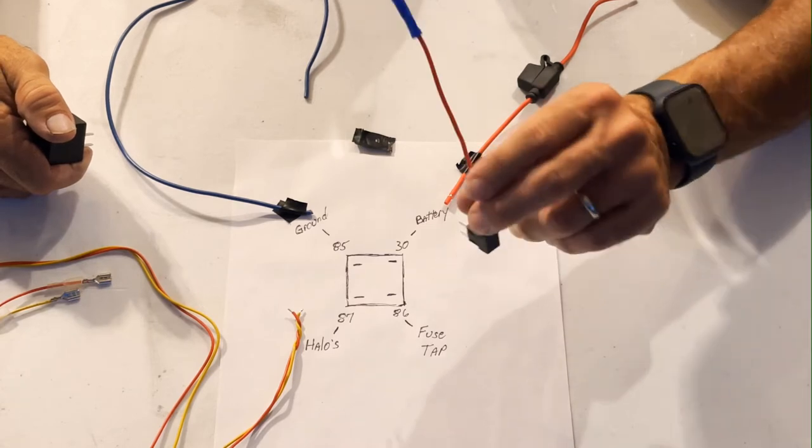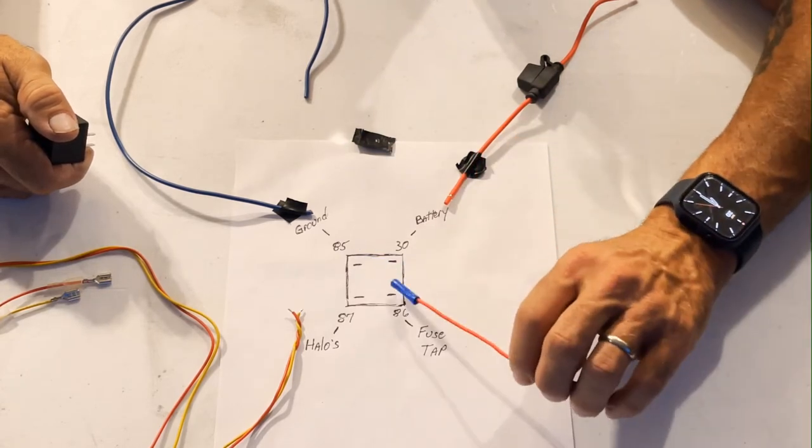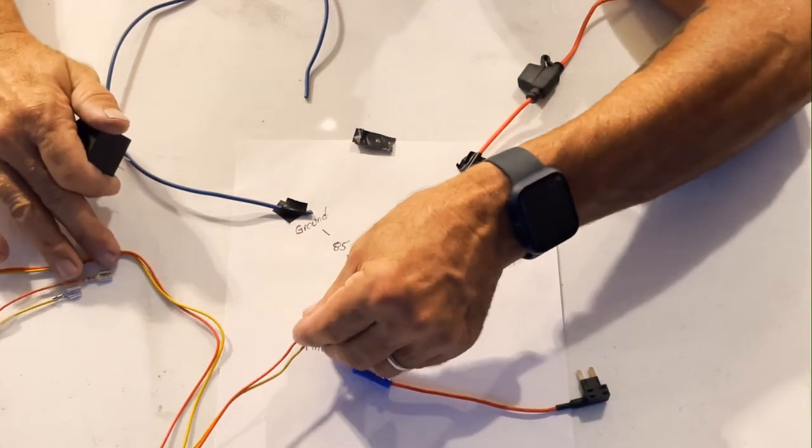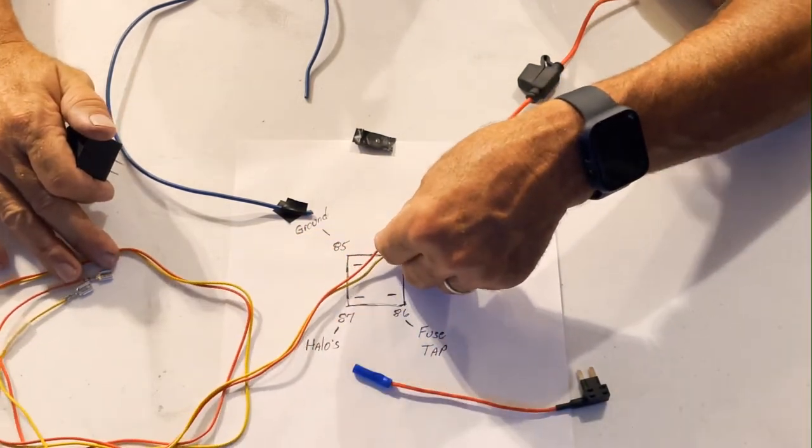So a fuse tap is really only to open a relay. And then once that's open, then the halos actually get their power directly from the battery.